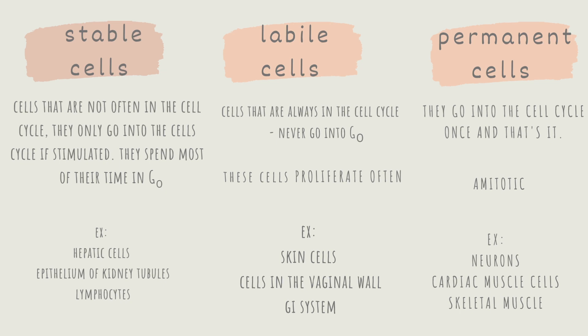So we can relate some of these states like quiescent state, apoptosis, and senescent state with these types of cells, right? Stable cells are often in the quiescent state, labile cells undergo apoptosis, and permanent cells are often in the senescent state.